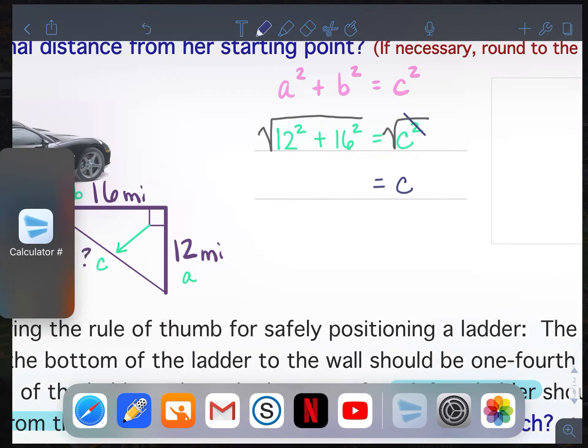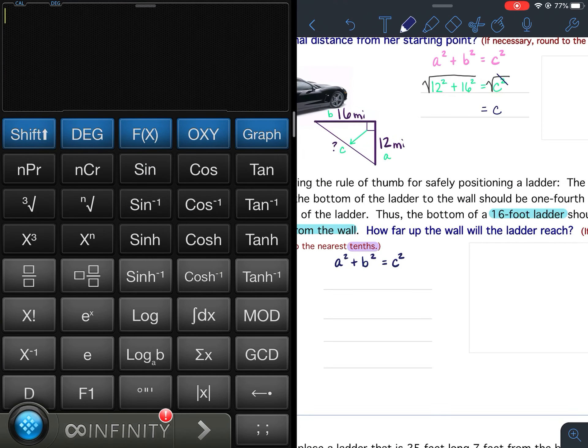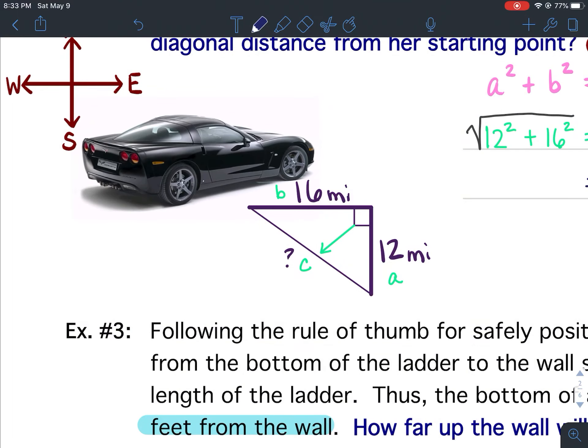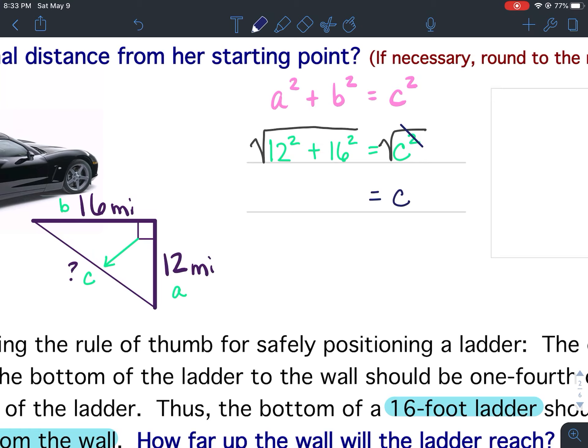So I need to put this into my calculator. I would take the square root of 12 squared. I'm finding the square root of 12 squared plus 16 squared is 20.